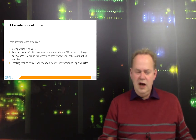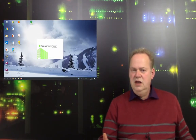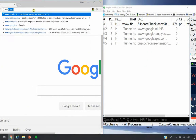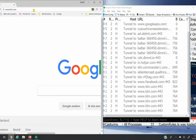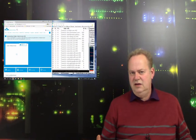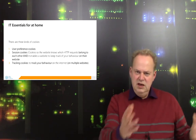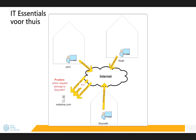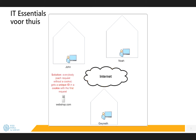Maybe you know the tool Fiddler. I've installed it on my laptop — it's for free. With Fiddler, you can monitor all the traffic, all the HTTP requests which are sent to the internet. If I go to a website, you see it's not one HTTP request — many HTTP requests are going over the line. As a website, I want to know which HTTP requests are from one user and which belong to another user. So the problem is: how does a website know which HTTP requests belong to each other? How does webshot.com know which request is from Gwyneth?